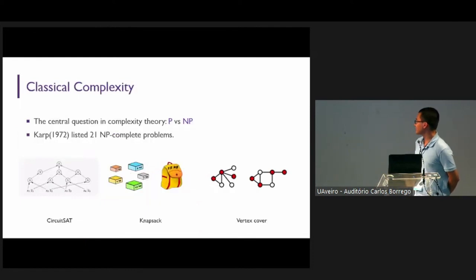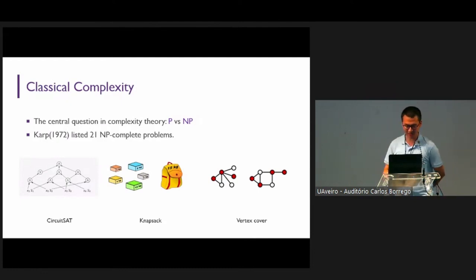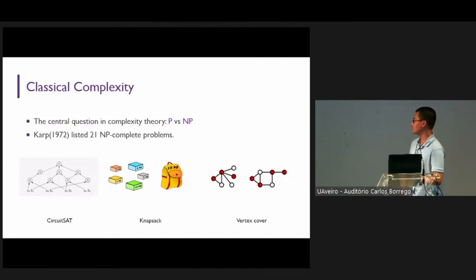To understand what is parameterized complexity, let's set our mind back to the start of classical complexity. The central question of classical complexity is the P versus NP problem. In his seminal work, Richard Clarke listed and proved 21 NP-complete problems. To name a few, there are the circuit satisfiability problems, the knapsack problem, and the vertex cover problem, and so on.